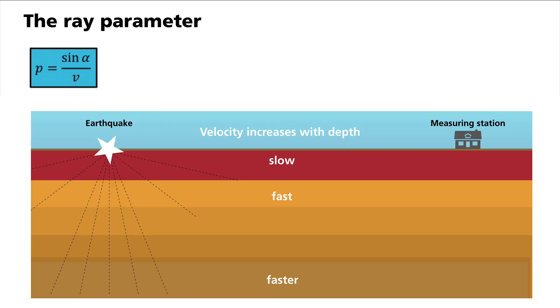Raypaths can therefore be bent at layer boundaries. Over longer distances, this ultimately leads to bent rays. In order to illustrate this, you see a comparison of two waves here.